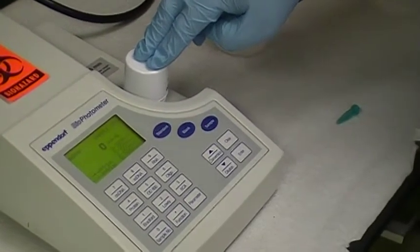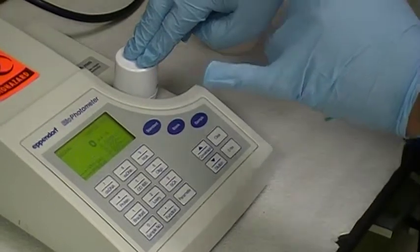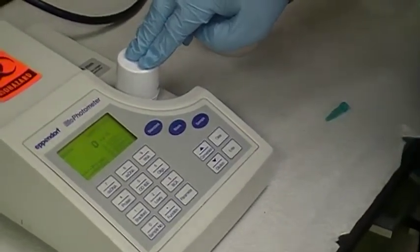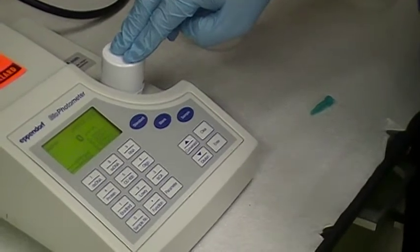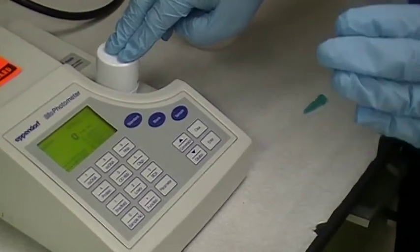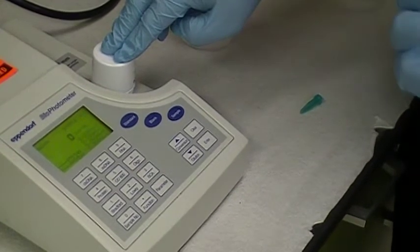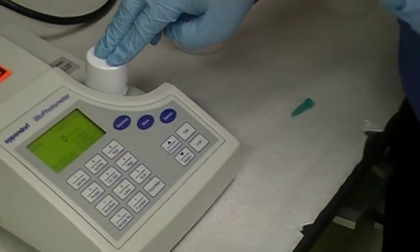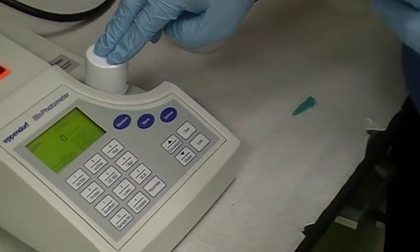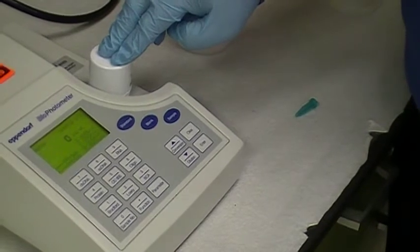Now, it should give you a value. Now, don't worry about the calculation. This machine is not as smart as you are. The calculation does not take into consideration how to calculate the concentration. Now, there is a formula that says one absorbance of double-stranded DNA is equal to 50 micrograms per mil of double-stranded DNA. That is the ratio that you use to calculate.